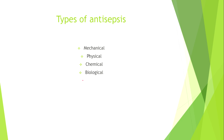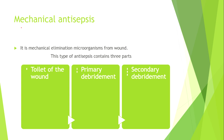Mechanical antisepsis specifically is the mechanical elimination of microorganisms from a wound. This type contains three parts: toilet of the wound, primary debridement, and secondary debridement. The word 'toilet' is a traditional term meaning we clean the wound from debris. Most of the time we use gauze and antiseptics, chemical compounds, or saline. Toilet of the wound means cleaning of the wound.